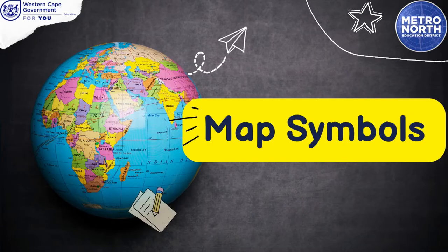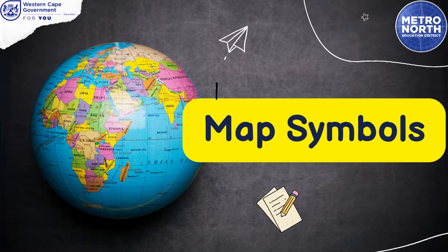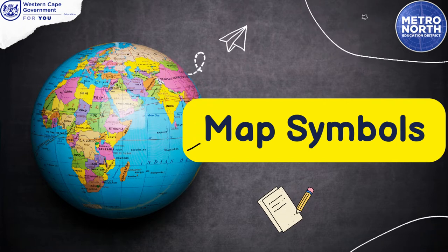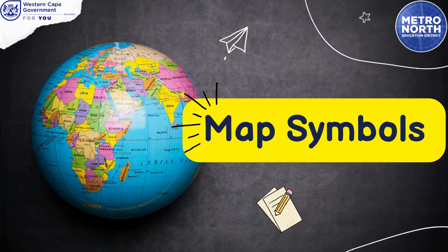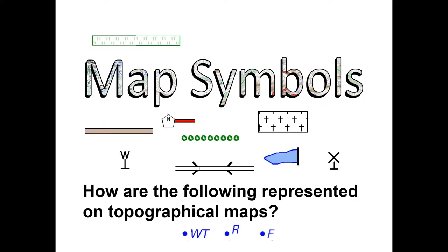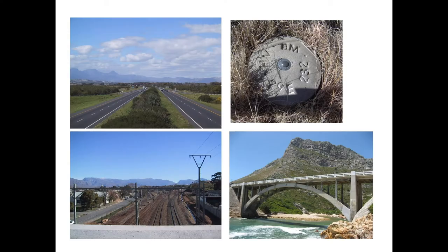Let's have a look at the various map symbols. With map symbols, you need to know how these symbols are represented on topographical maps. This will help you with your interpretation. Let's have a look at the following photos and how they are represented on maps.